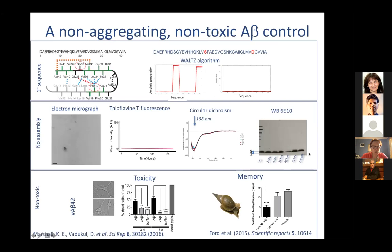Compared to wild-type Abeta, which would show fibrils, an increase in thioflavin T, beta sheet by CD, and a smear of large insoluble species on a gel, our variant does none of those things. When we looked at toxicity using the live-dead assay, we found that the variant Abeta was not toxic — it had no effect on cells over time. We also worked with a colleague, George Kemenes, who works on water snails as a model system for memory and learning.